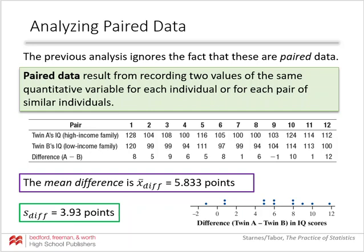We are going to take the identical twins — one raised in a high-income family and one in a low-income family — who came from the same biological parents, and pair them together. You can see that in pair one, even though twin A had a higher IQ than twin B, both had above-average IQs. Pairing the data helps control for some variability that can be affected by other factors.